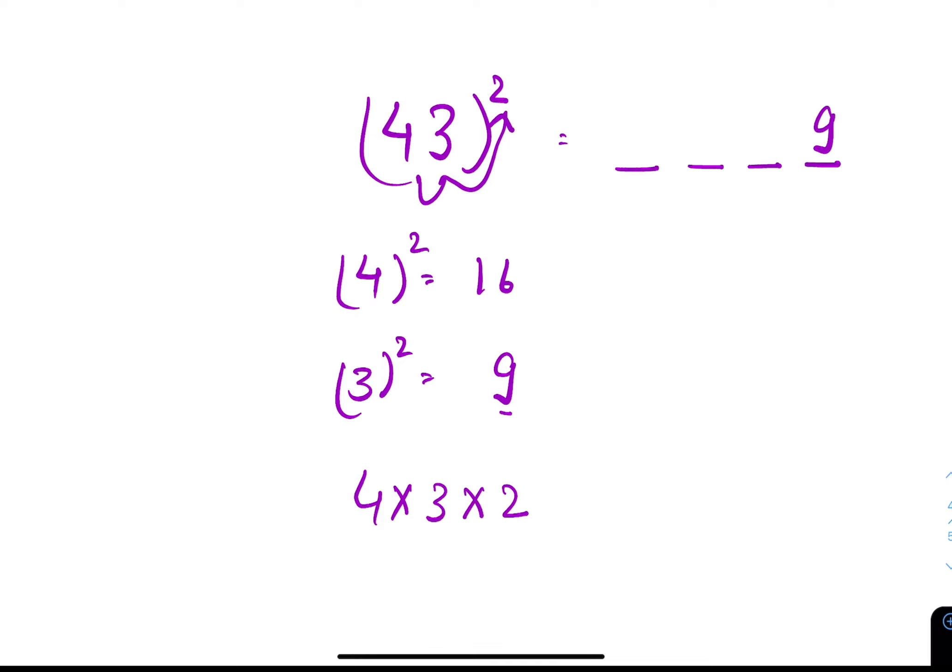Which is 4 into 3, 12. 12 into 2, 24. We will write 4 of 24 here and 2 will be carry over. This 2 will add to 16. So 16 plus 2 is 18. 1849.